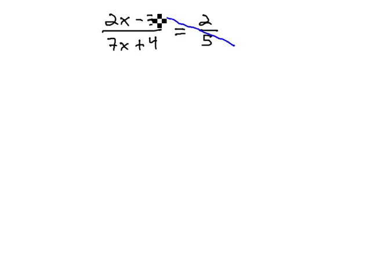Again, in this problem, we'll use the cross product, multiplying diagonals, and as we do, we'll remember parentheses around the binomials. We're solving 2x minus 3 over 7x plus 4 equals 2 fifths.